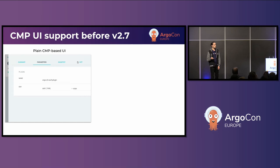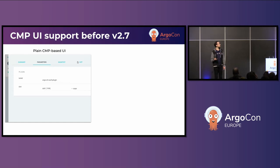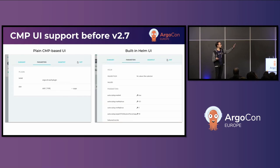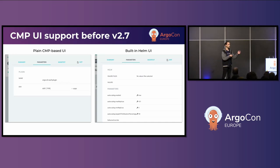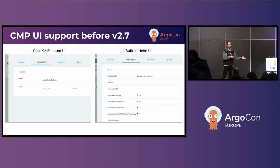The problem we wanted to solve with plugins is that the UI isn't super rich. If you've used Argo CD with Helm, you're used to rich integrations — you can set values files, set parameters, and everything is laid out for the user. On the other hand, the CMP UI up until version 2.7 only lets you set environment variables that get passed to the plugin. It's not communicated to the user what environment variables the plugin expects. You just have to know.